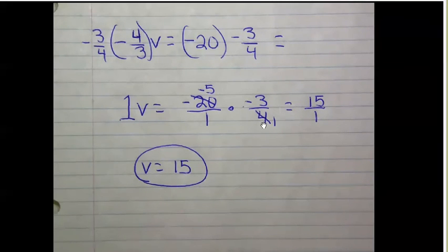Looking at these, negative 20 and 4 can cross cancel because 4 goes into both. 4 divided by 4 is 1, and negative 20 divided by positive 4 is negative 5. So these numbers are easier to work with when multiplying. Negative 5 times negative 3 is positive 15, and 1 times 1 is 1. 15 over 1 is just 15, and so v equals 15.